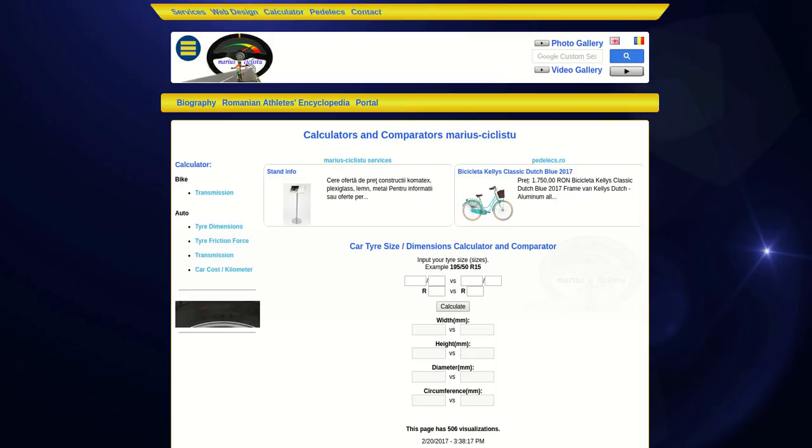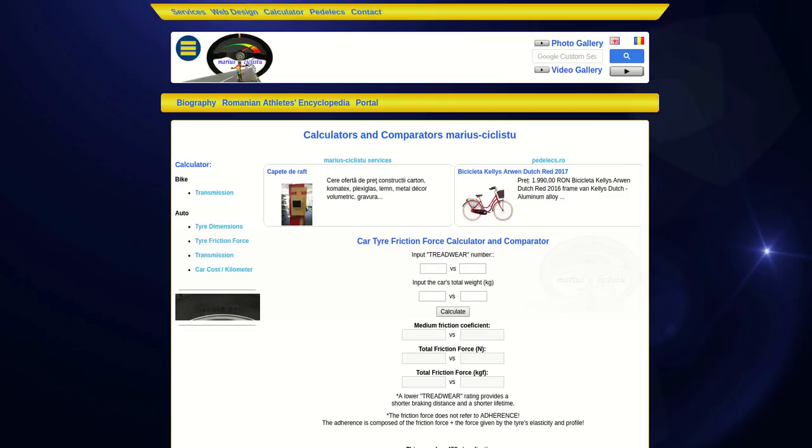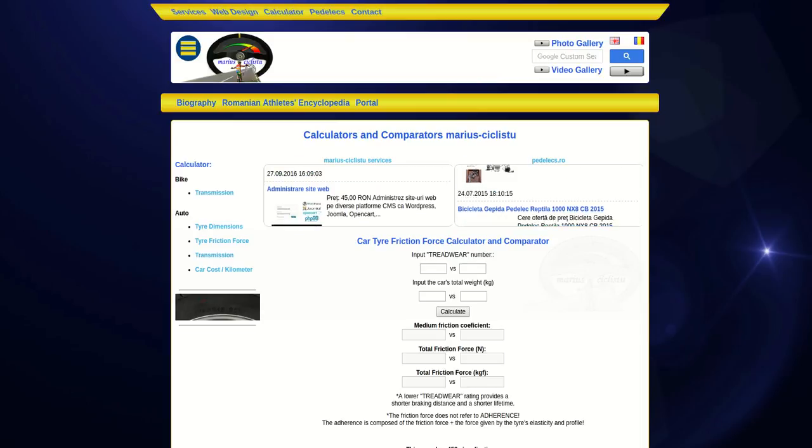Then I did an online tire friction force calculator based on its treadwear number, that shows only the friction force. The adherence is composed of friction force and other components generated by the tire profile and elasticity.